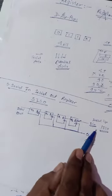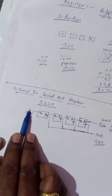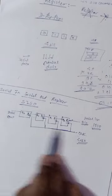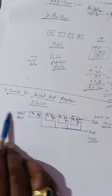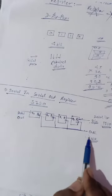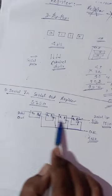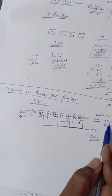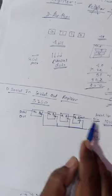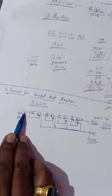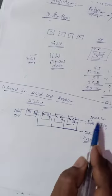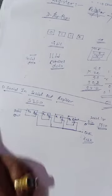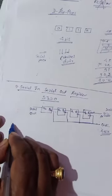This is called serial in. For serial out, to read the stored data 1010, apply a clock and the first bit comes out from Q3; apply another clock and the next bit comes out, and so on for four clocks. To clear the register after reading, continuously apply 0 so that zeros shift in and the stored data shifts out serially. This is the serial in serial out (SISO) type register.